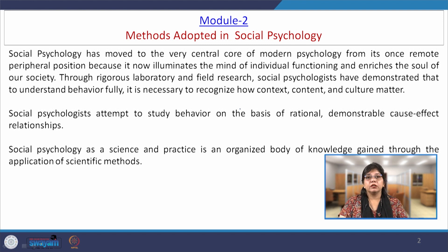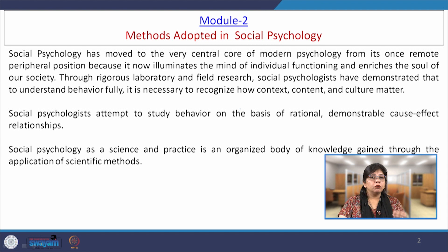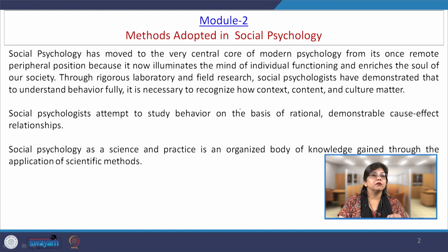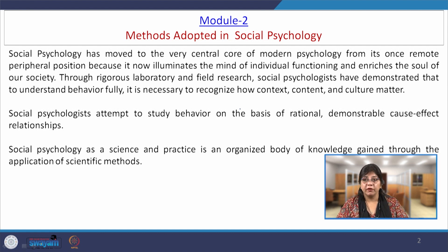The significance of this discussion is how different kinds of research methodologies can help to understand human behavior from different perspectives — not only social or group situations, but also from a cultural perspective. Social psychologists have attempted to study behavior on the basis of rational and demonstrable cause-effect relationships, which can only be demonstrated when scientific research methods are executed. Social psychology as a science and practice is an organized body of knowledge gained through the application of scientific methods.